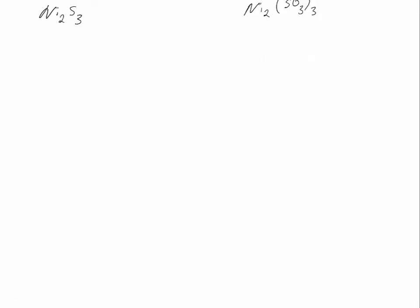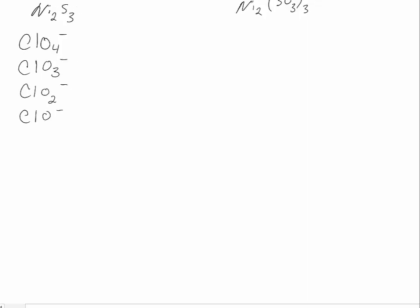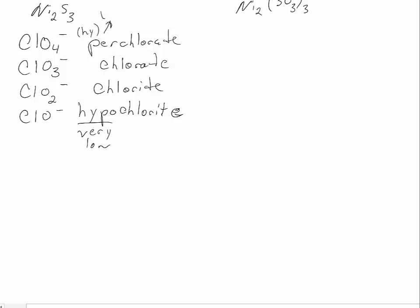Now with polyatomic ions, you need to have these memorized. And there's a list on D2L for you to memorize. But in general, there's a pattern here where you can see as the number of oxygens in the polyatomic ion goes up or goes down, the name changes. So perchlorate, chlorate, chlorite, and hypochlorite. Now these are kind of like hyper and hypo, like hypertonic and hypotonic, where hypo means very low and hyper means very high.